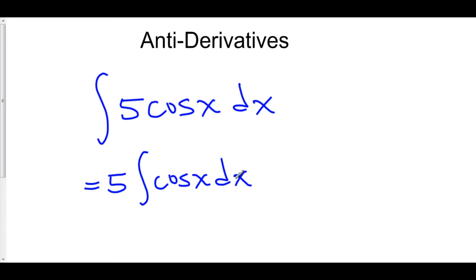And the antiderivative of cosine x dx is the function that when you take the derivative of it, gives you cosine. Well, the derivative of sine gives you cosine.